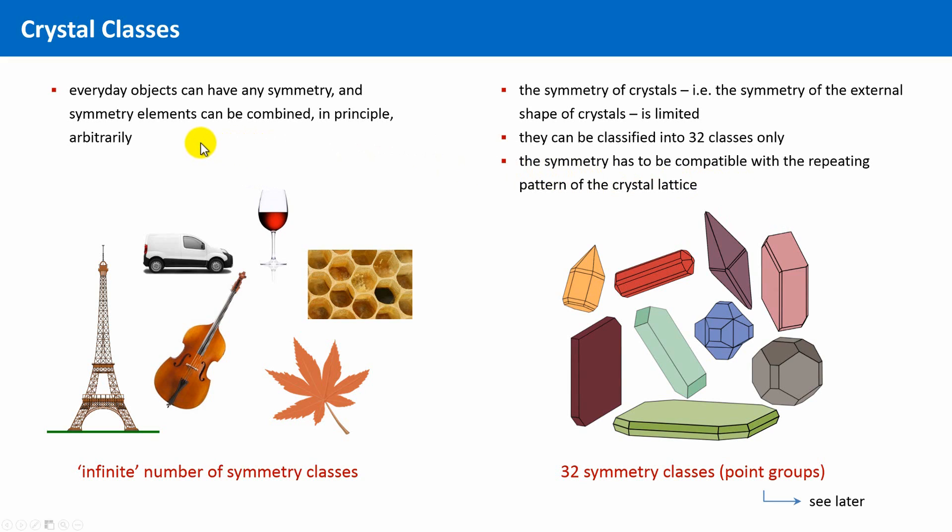This is different for everyday objects. These objects can have, in principle, any conceivable symmetry. Remember, for instance, this wine glass with its infinite rotational symmetry. However, it is also true that a tiling made of identical tiles with a 5-fold rotation does not exist.